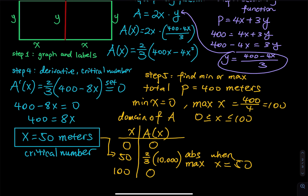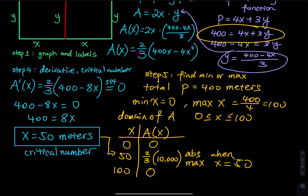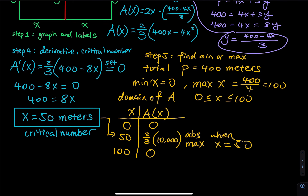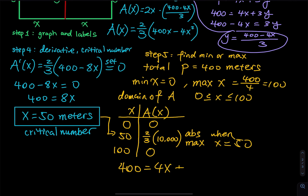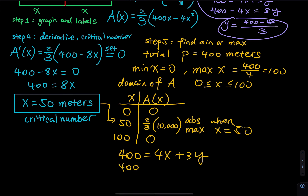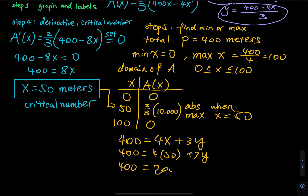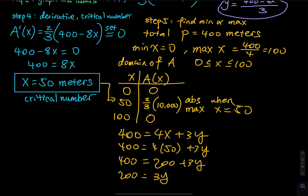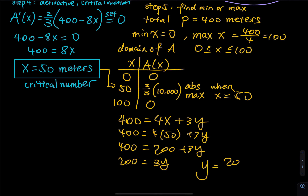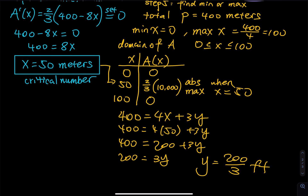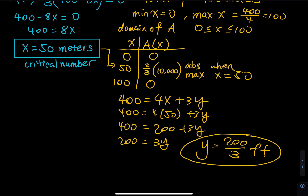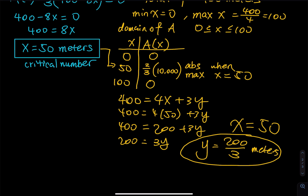We're not done yet — we still have to find y. Remember: 400 equals 4x plus 3y. Plug in x equals 50: 400 equals 4 times 50 plus 3y, so 400 equals 200 plus 3y, giving 200 equals 3y. Therefore y equals 200 divided by 3 meters. Provide the exact answer — the optimal dimension that maximizes the area is x equals 50 meters and y equals 200 over 3 meters.